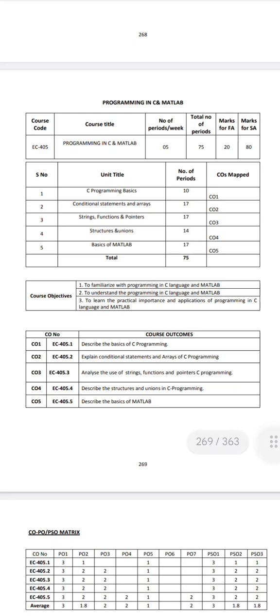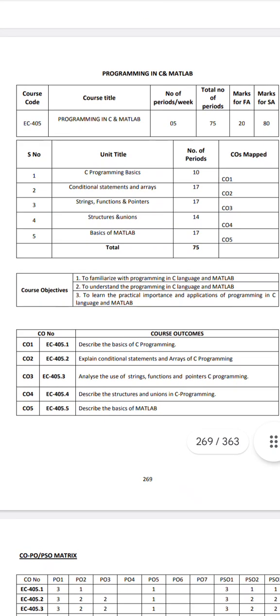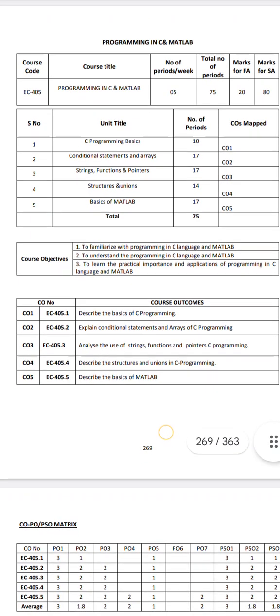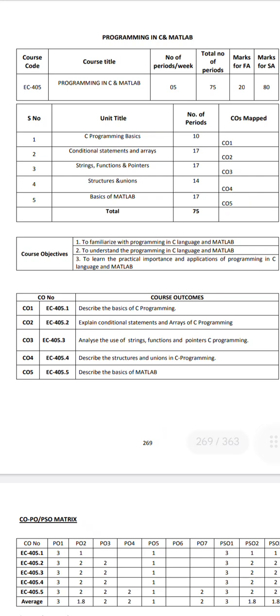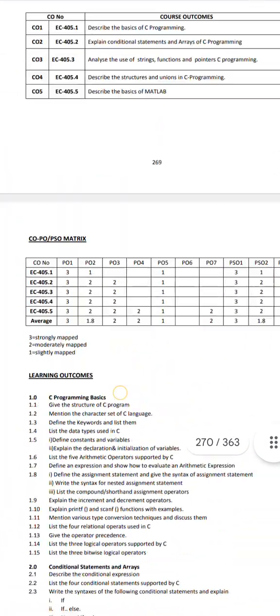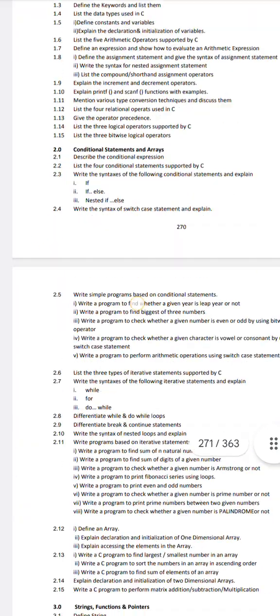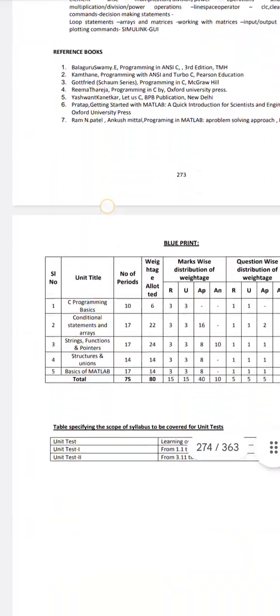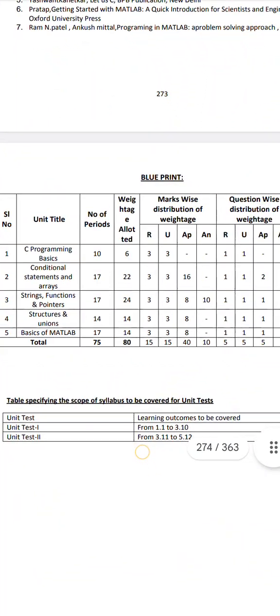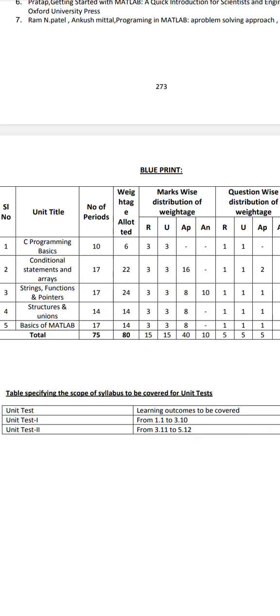Now let's start programming in C and MATLAB. First of all, if you want to choose C programming, you don't need to prepare the most program-oriented content. You will definitely pass the theory questions. If you want to pass the whole lesson, I will give you tips. You have 5 units, and the highest weightage is in the 2nd and 3rd units — prepare with a lot of concentration.